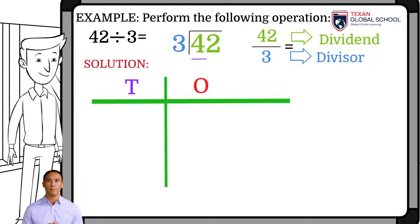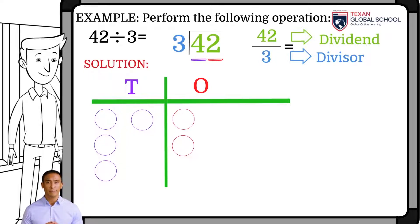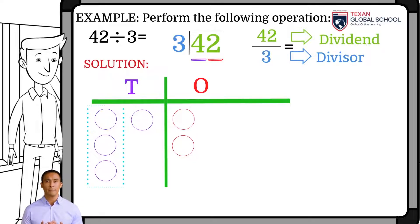Since we have four 10s, we draw four elements which each represent a 10. Since we have two 1s, we draw two elements which each represents a 1. The operation indicates that we must divide by 3, therefore we first select the 10s elements in groups of 3.